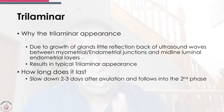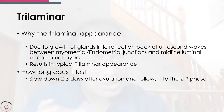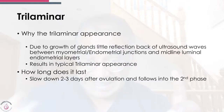Most importantly, how long does the trilaminar appearance last? Many people think that as soon as ovulation occurs the lining immediately changes, but the answer is no — it changes later on. It seems to slow down two to three days after ovulation and transitions into the second phase. So remember, if you see a collapsed follicle but still see a trilaminar pattern, ovulation may still have occurred.